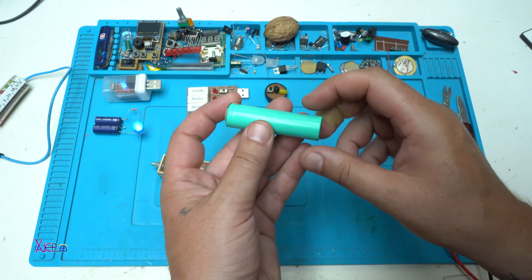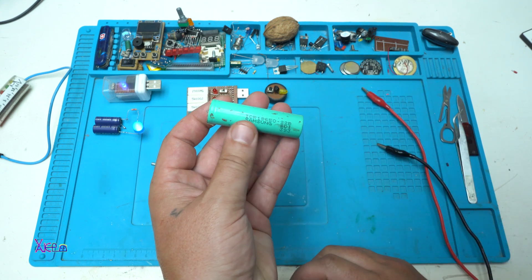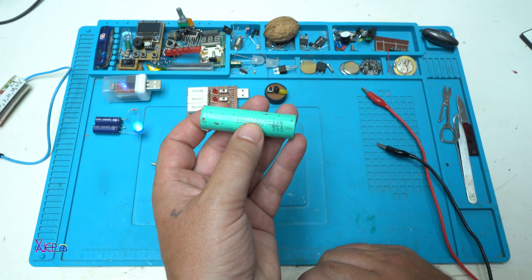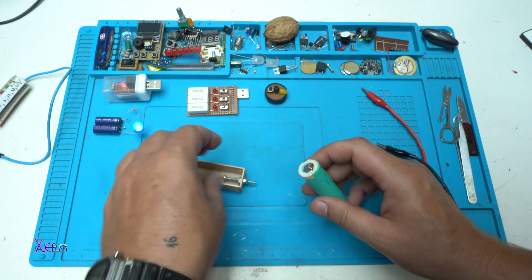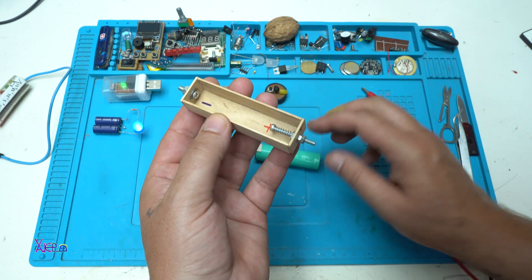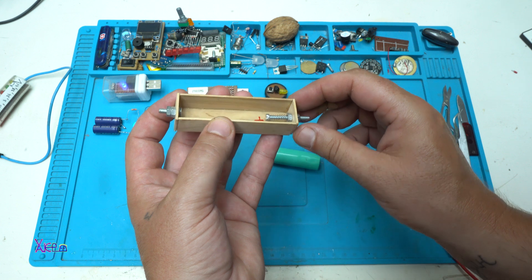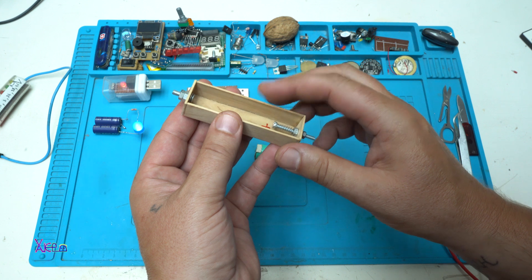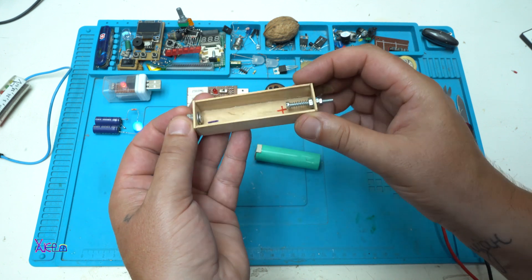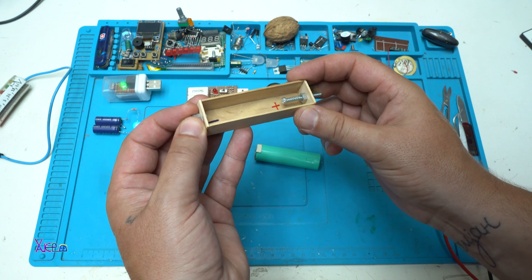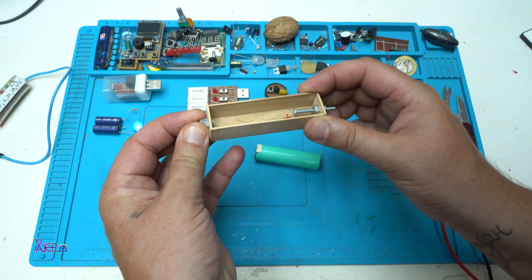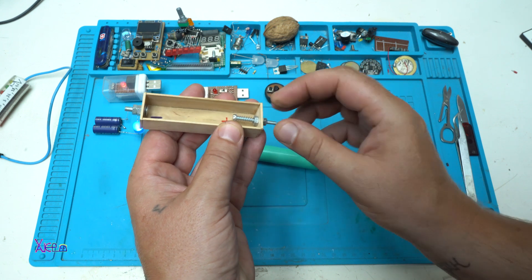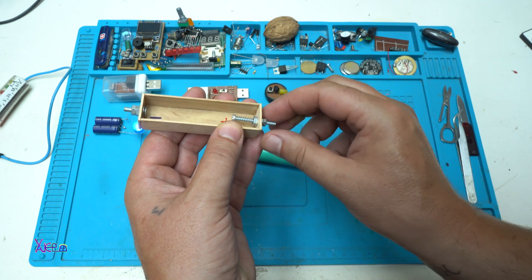When you want to charge this kind of lithium batteries, in this case 18650 battery, you can make a battery holder like this one. It's made out of wooden popsicle sticks and metal screws. This is the negative side that is fixed and this one can be adjusted because I added a small spring.